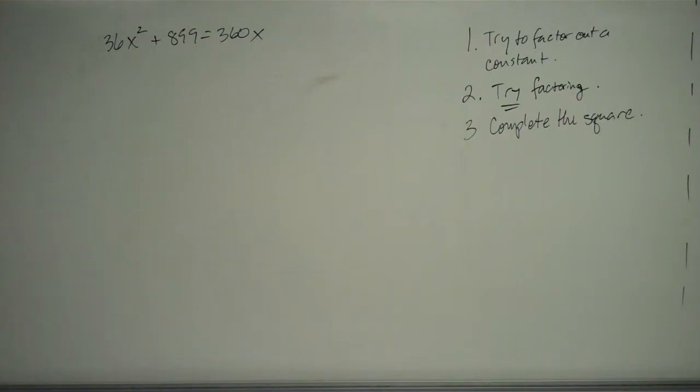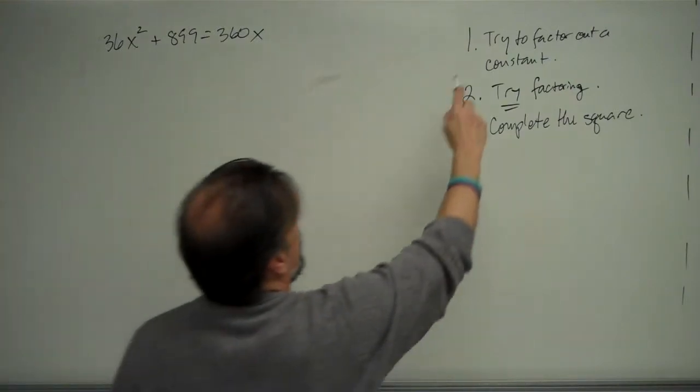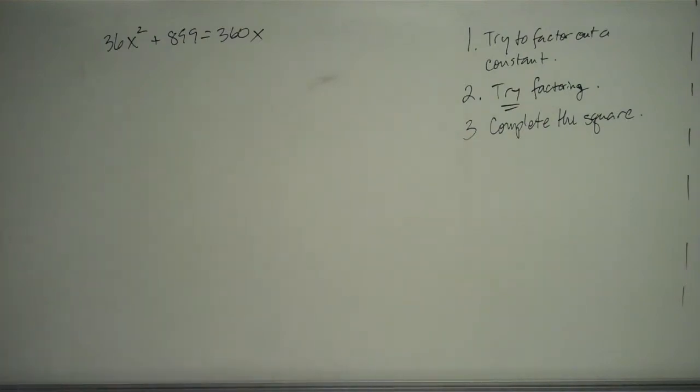The first step that you always try to do is try to factor out a constant. And as I'm looking at this, 36 is divisible by 2 and by 3 and by 6 and by 4, but the problem is 899 is not divisible by any of those. So that's kind of a bummer.